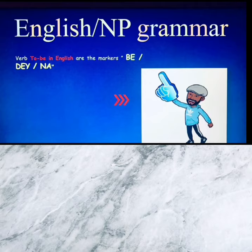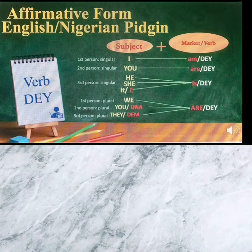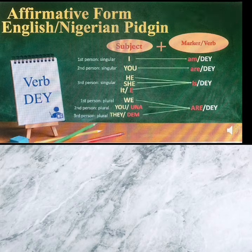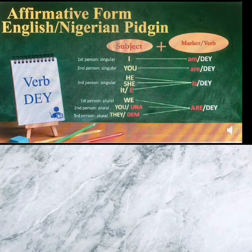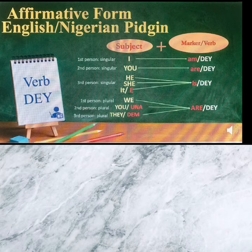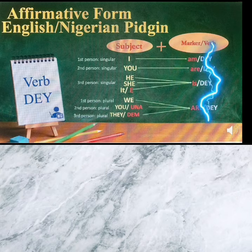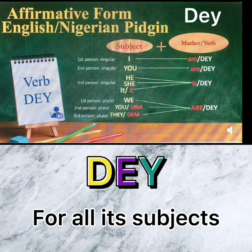First, let's look at the conjugation of the affirmative form of the marker D in both languages. 'I am' — 'I dee.' 'You are' — 'you dee.' 'He is' — 'i dee.' 'She is' — 'she dee.' 'It is' — 'i dee.' 'We are' — 'we dee.' 'You are' — 'una dee.' 'They are' — 'den dee.' Note: in English the verb 'to be' is conjugated across all subjects, but Nigerian Pidgin English has only one conjugation — the marker D — for all its subjects.